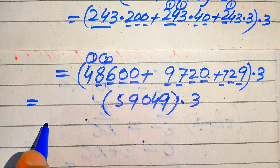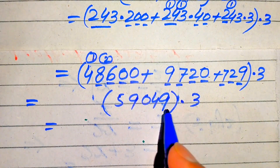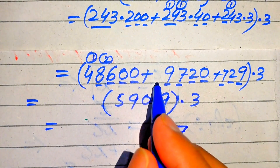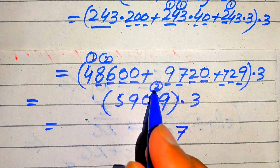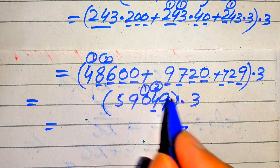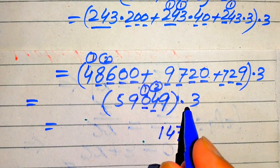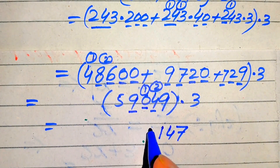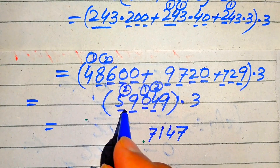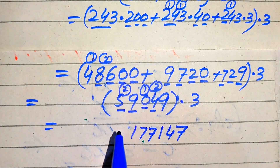Multiplying 59,049 by 3: 3 times 9 is 27 (write 7, carry 2), 3 times 4 is 12 plus 2 is 14 (write 4, carry 1), 3 times 0 is 0 plus 1 is 1, 3 times 9 is 27 (write 7, carry 2), 3 times 5 is 15 plus 2 is 17. So the value of 3 to the power of 11 equals 177,147.